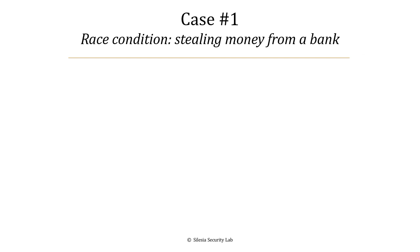Okay guys, now it's time for case number one: race condition stealing money from a bank. What I'm going to present to you in this case is how to hack a web application with multi-threading. Multi-threading is very much related to race conditions. Via a multi-threaded attack, we can trigger a race condition, and via race condition, we can launch some really powerful attacks — for example, stealing money from a bank.